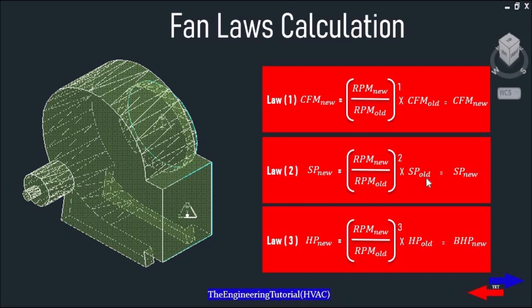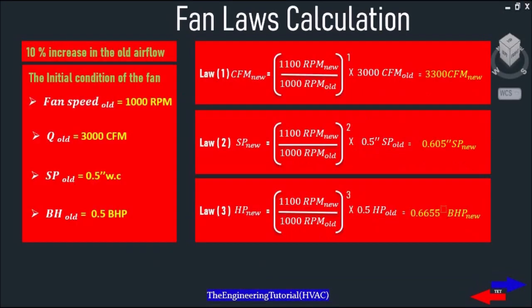The third fan law tells us that the horsepower increases as the airflow changes, and it is calculated according to the cube of the speed ratio. Fan Law 3: Horsepower new equals (RPM new divided by RPM old) cubed, multiplied by Horsepower old, which gives us brake Horsepower new.